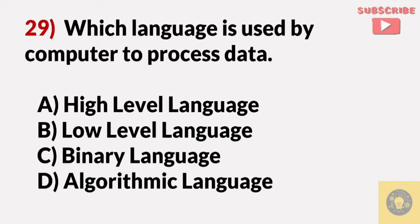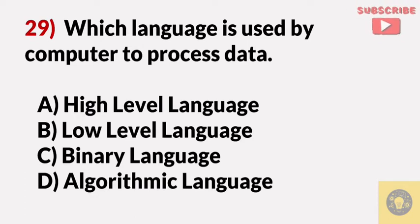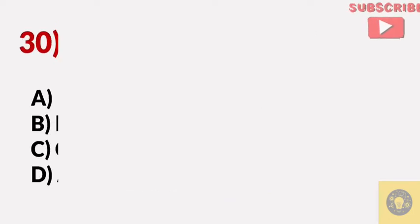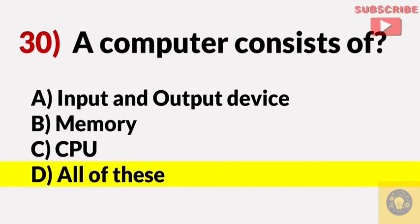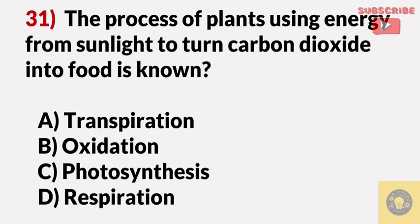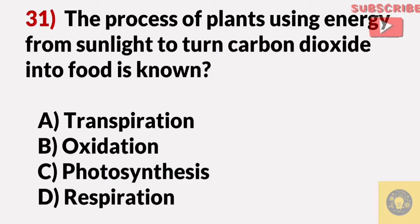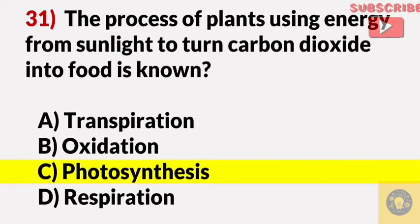Which language is used by a computer to process data? Answer B, low level language. A computer consists of? Answer D, all of these — input and output device, memory, and CPU. The process of plants using energy from sunlight to turn carbon dioxide into food is known as? Answer C, photosynthesis.